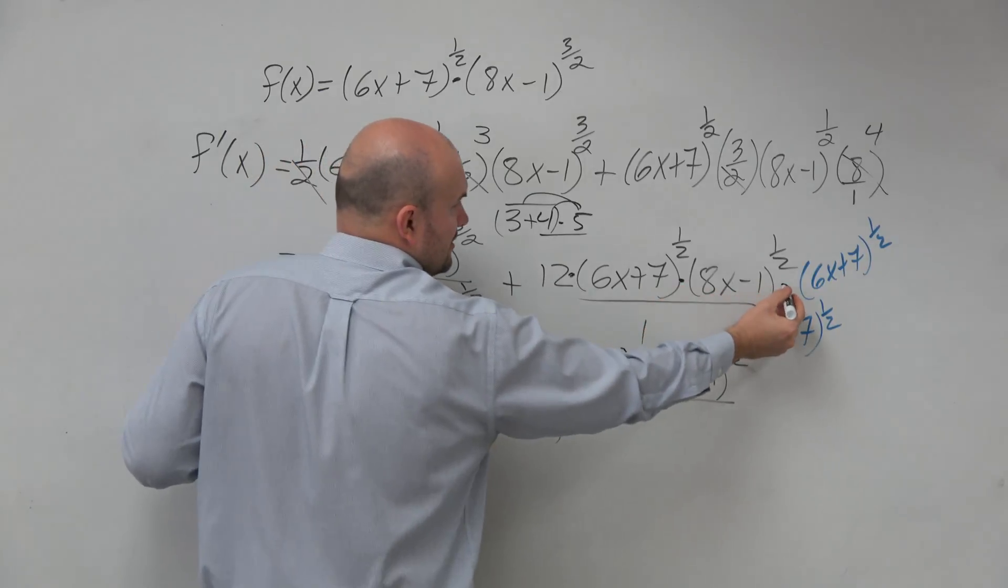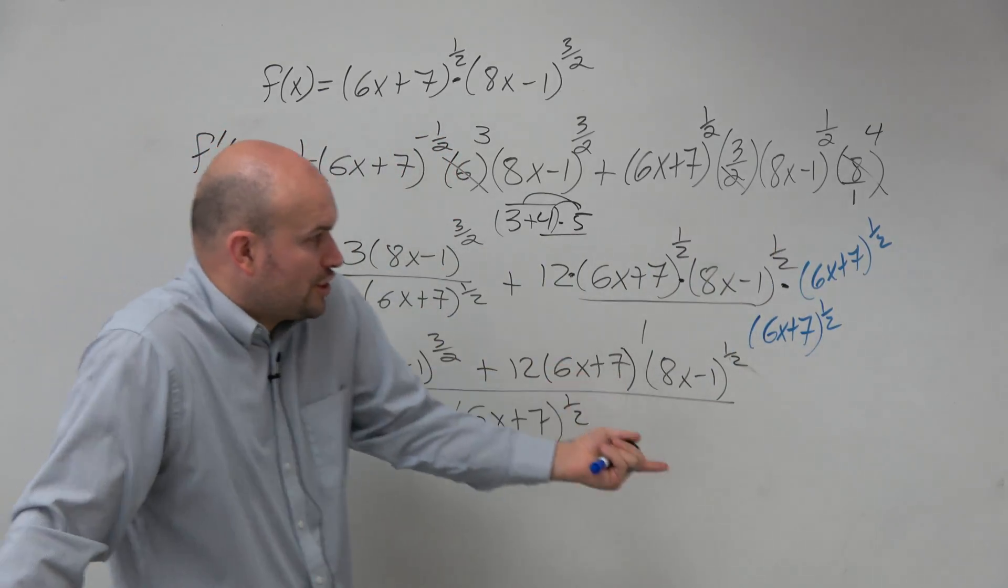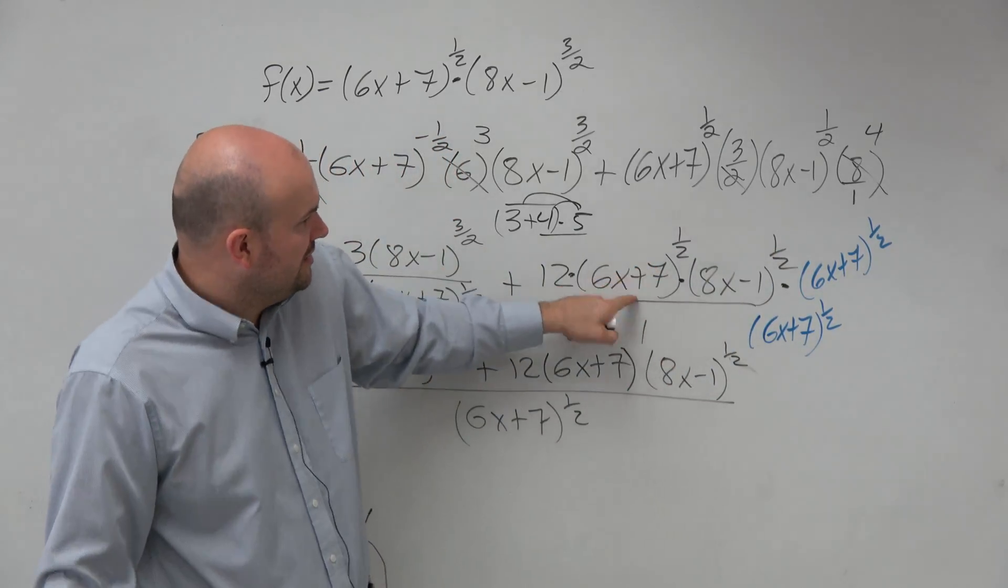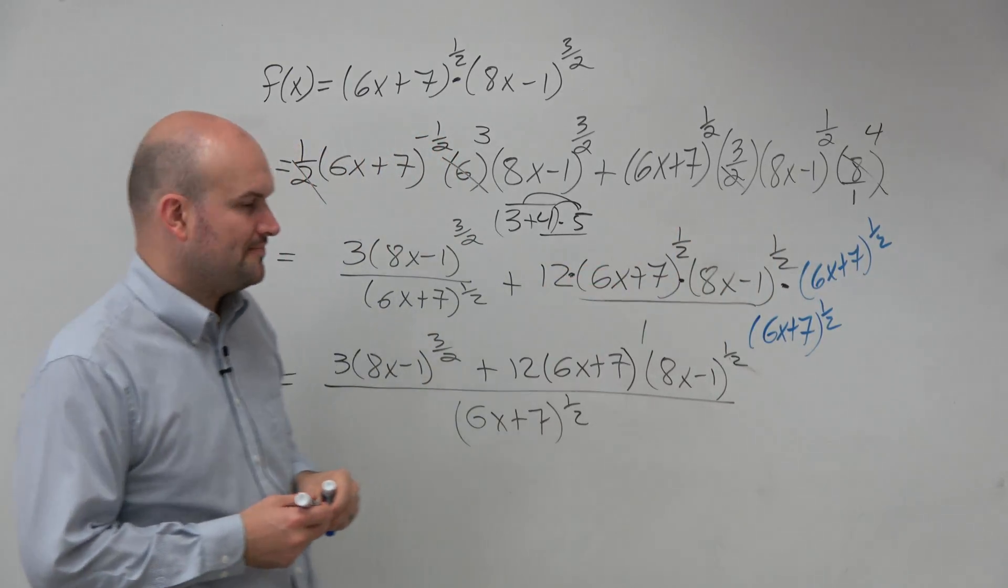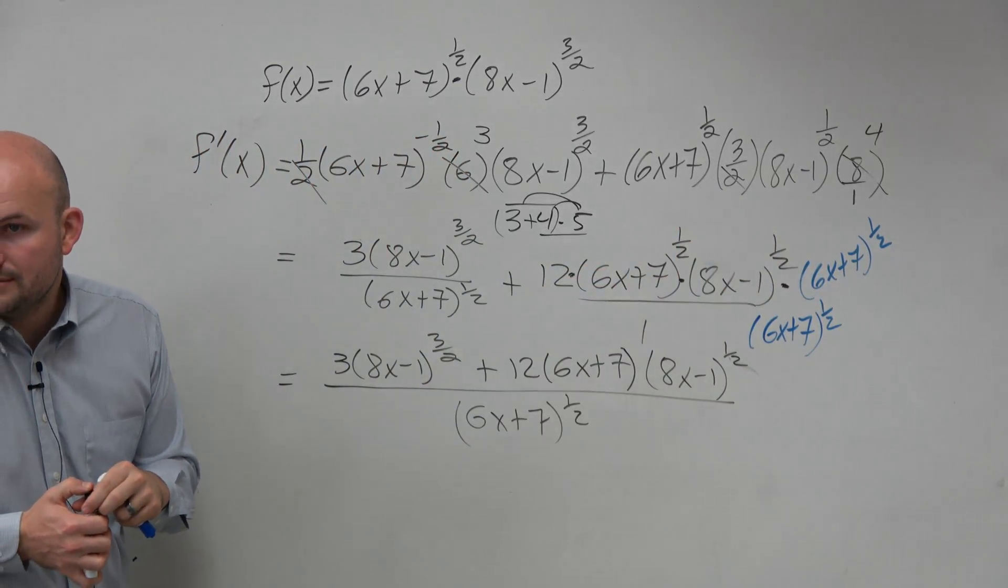Everything is being separated by multiplication. So we just need to, so the only terms that we can simplify by multiplication is these two. So we just multiply them. Does that make sense? Any other questions? All right.